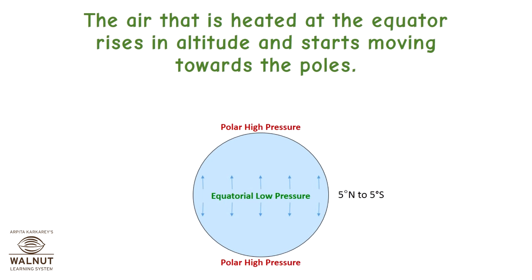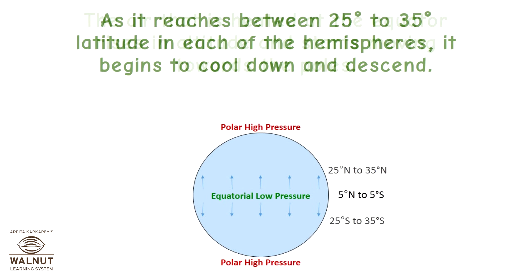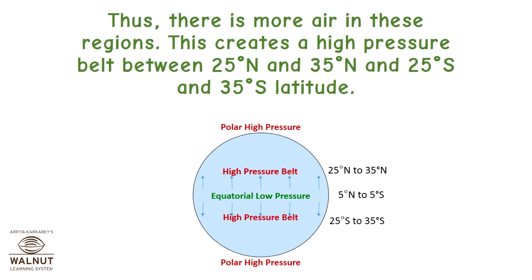The air that is heated at the equator rises in altitude and starts moving towards the poles. As it reaches between 25 degrees to 35 degrees latitude in each of the hemispheres, it begins to cool down and descend. Thus, there is more air in these regions, creating a high pressure belt between 25°N–35°N and 25°S–35°S latitude.